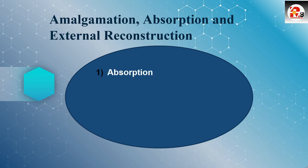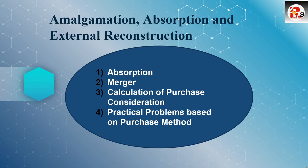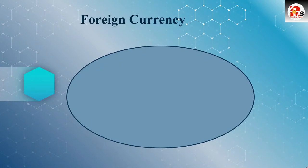In amalgamation, you will study the absorption-related part and the acquisition-related part. Then we will learn what merger is. We will also be learning how to calculate the purchase consideration — how to calculate it practically. We will learn practical problems based on the purchase method. There are two methods: merger method and purchase method. Only the purchase method is in your syllabus; the merger concept is there but the merger method is not. So practical problems will be based on the purchase method.